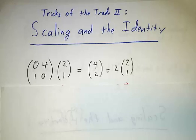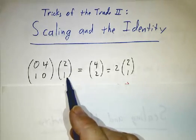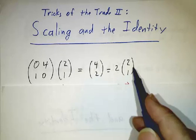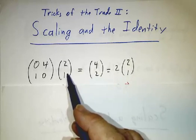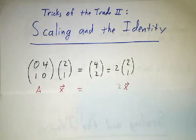So let's start with the matrix (0,4,1,0). And you'll notice that if you multiply it by (2,1), you get (4,2), which is twice (2,1). In other words, (2,1) is an eigenvector of (0,4,1,0) with eigenvalue 2.